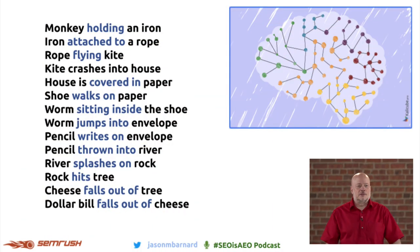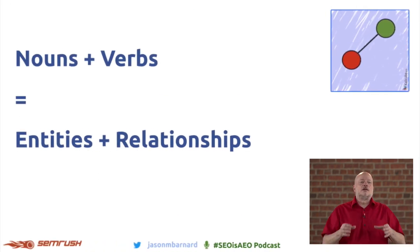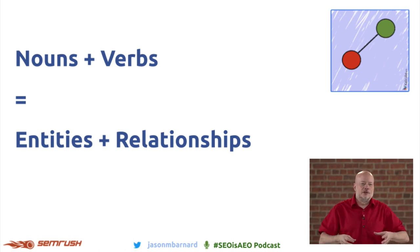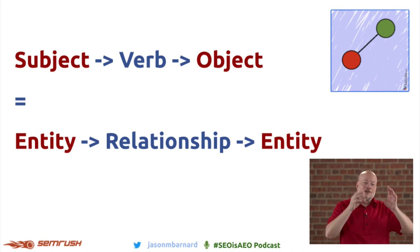What he has done is taken 15 entities and made relationships between them that makes it incredibly easy for the human brain to remember. In that example, we had lots of nouns and verbs. Nouns and verbs are entities and relationships. Subject, verb, object equals entity, relationship, entity.